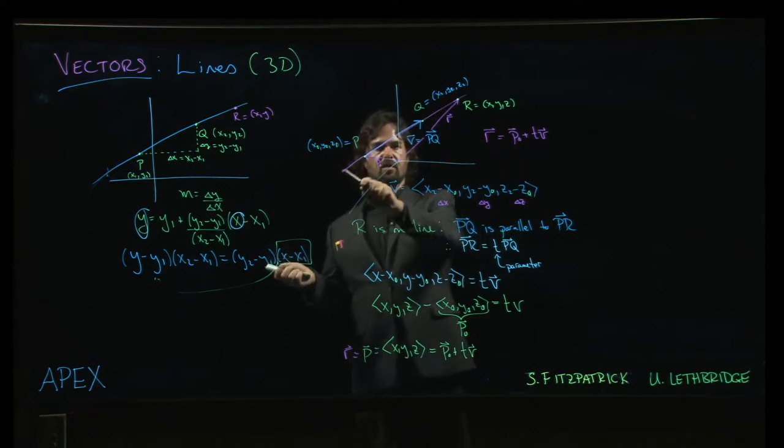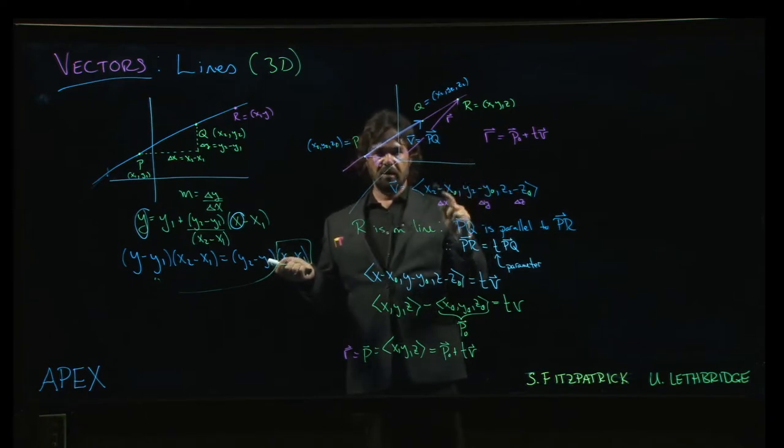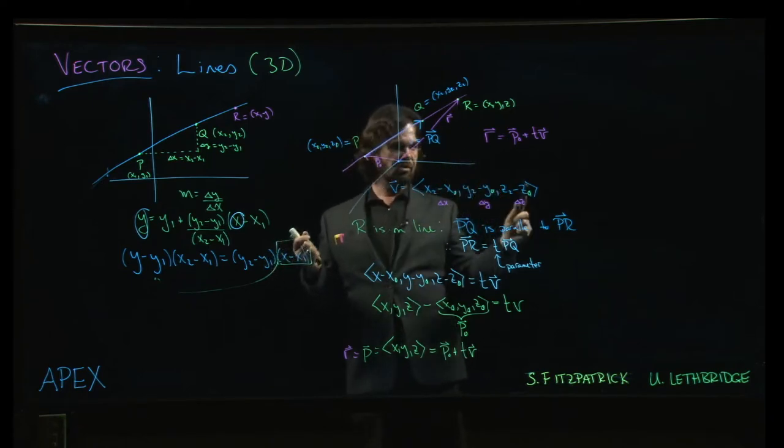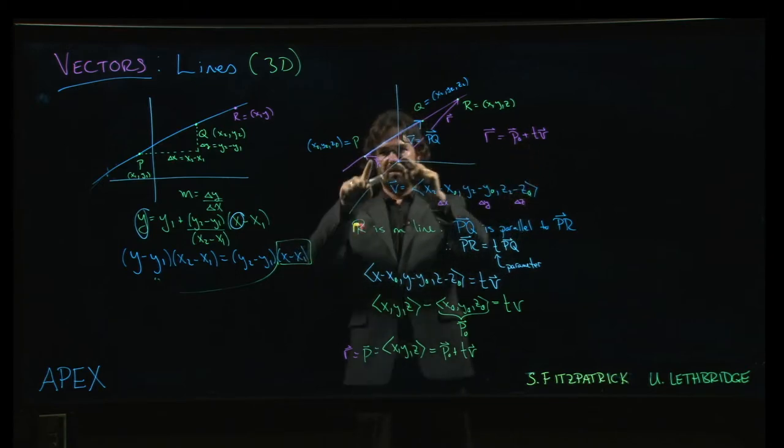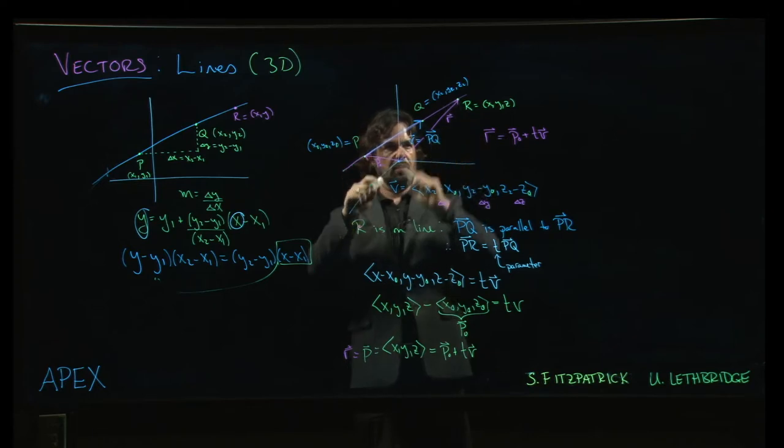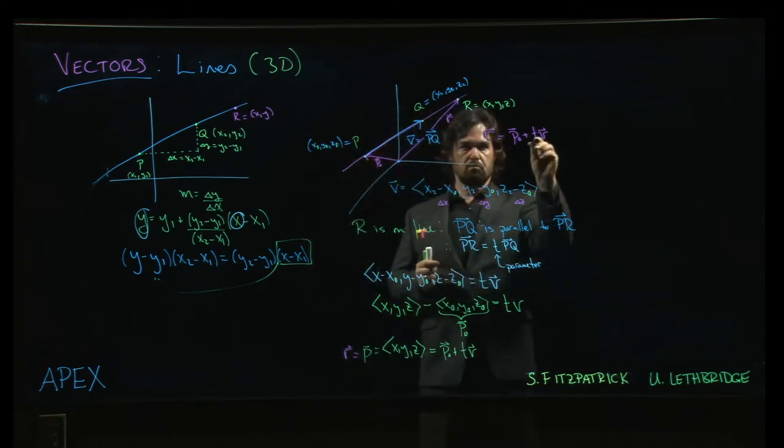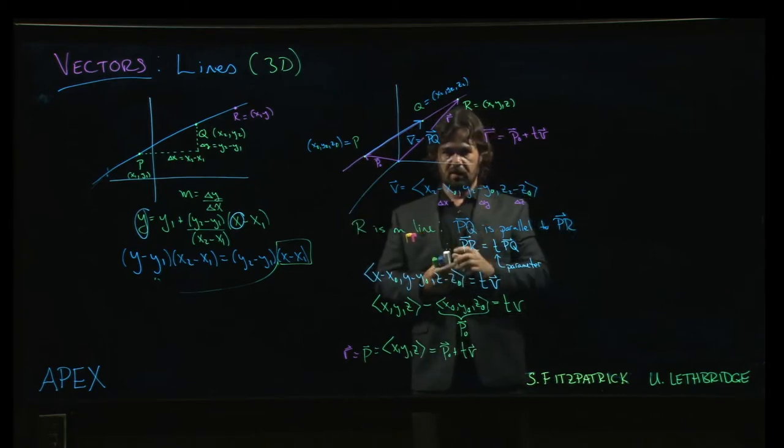The vector v tells you the direction that you have to move in to stay on the line. So moving in the direction of v lets us stay on the line. We're on the line. Now we're going to stay on the line. And then to get to a particular point on the line, we need to know how far to go in that direction. That's where this number t comes in. It says how much do we have to stretch or shrink or possibly reverse this vector to get to the point we want to go to. So we have to stretch it out a little bit to get to that point r.